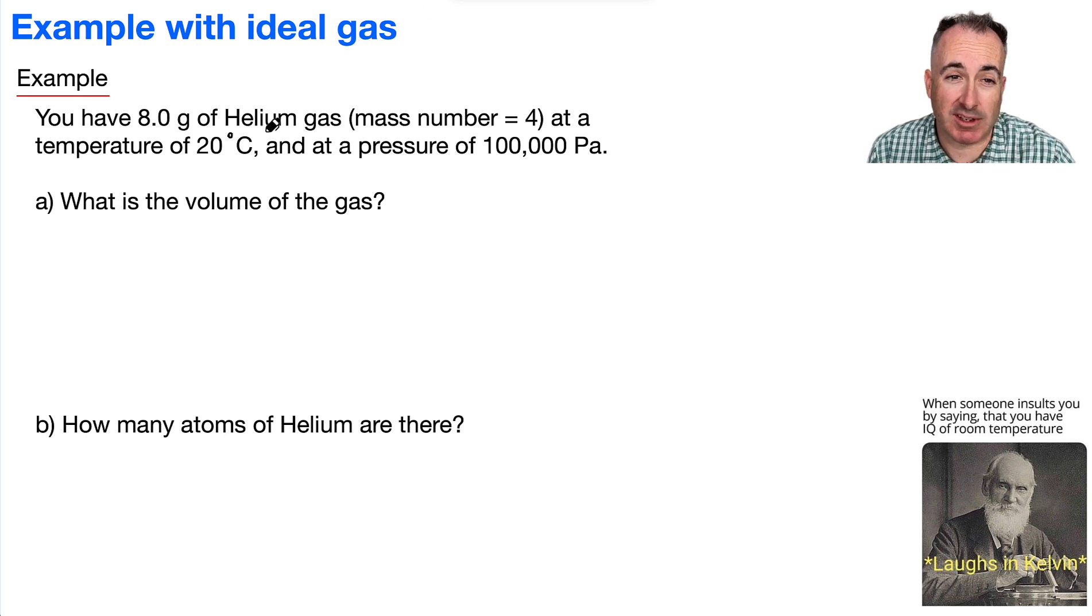We have 8 grams of helium gas, and we're told the mass number is 4, and we have a temperature of 20 degrees Celsius and a pressure of 100,000 pascals. The question is: first, what's the volume of the gas, and after that, how many atoms of helium are there?